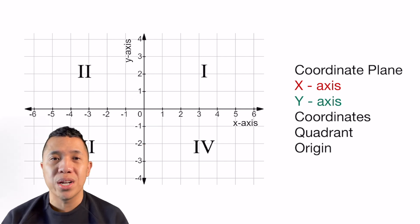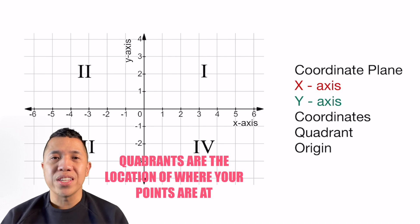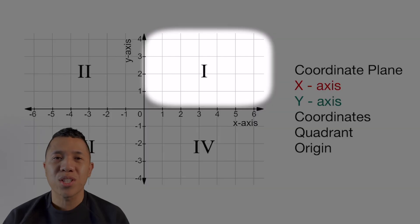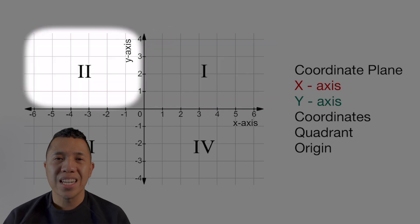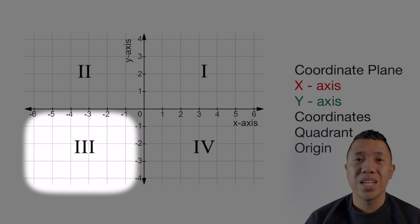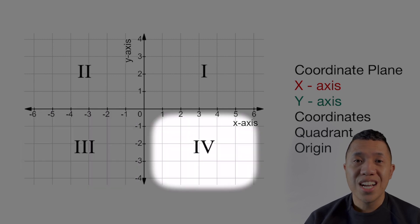And the last word that I want to talk about are quadrants. Quadrants are the areas of where your points are at. Anything in this quadrant is quadrant one. Anything in this quadrant is quadrant two. Everything in this quadrant is in quadrant three. And everything in this quadrant is quadrant four.